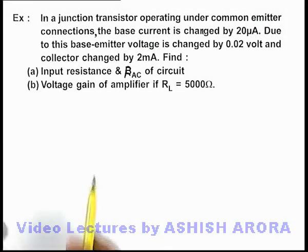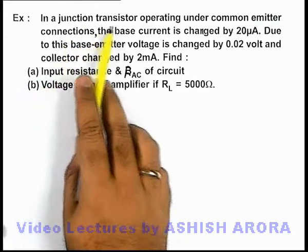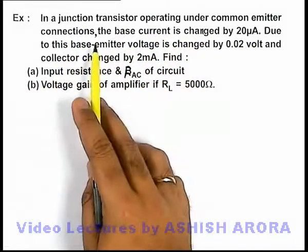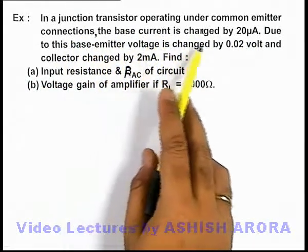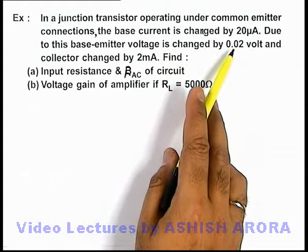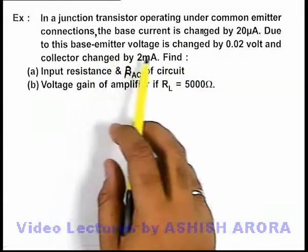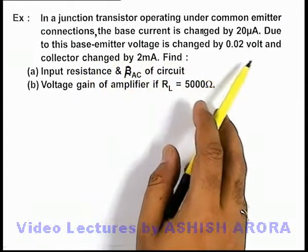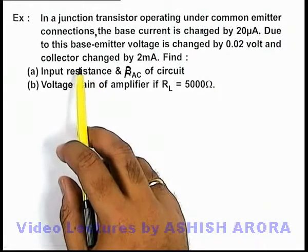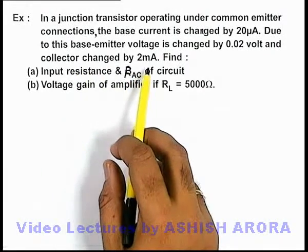In this example, we are given that in a junction transistor operating under common emitter connections, the base current is changed by 20 microampere, and due to this base-emitter voltage is changed by 0.02 volt and collector current changed by 2 milliampere.